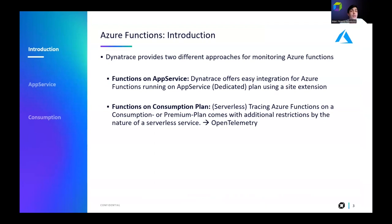Dynatrace provides two different approaches to monitor Azure Functions because they come in two different flavors: Azure Functions running on App Service Plans and Azure Functions running on Consumption Plans. Functions running on App Service Plans have a dedicated App Service Plan with an underlying host that we can access, so we can install one agent in that host and easily monitor the functions just by clicking a single thing in the Azure portal.